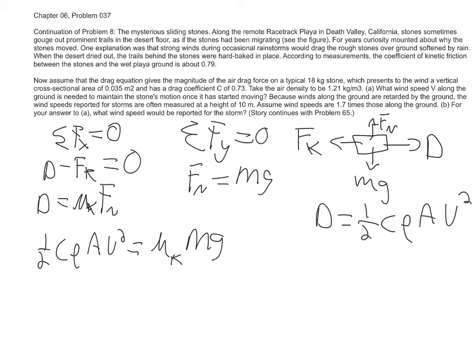So doing the algebra, you should be able to come up with an equation where you find that V is just going to be equal to the square root of 2 mu k mg divided by, dividing by everything that's left there, which is the drag coefficient C, times the density rho, multiplied by A.